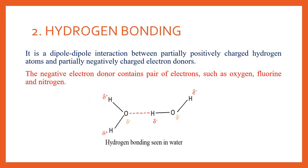Hydrogen bonding is a dipole-dipole interaction where a partially positively charged hydrogen atom forms a bond with partially negatively charged electron donors. For example, in the water molecule, hydrogen bonding is present. The electron donors have a lone pair of electrons and can be oxygen, as in water, fluorine, or nitrogen. The red dots indicate the hydrogen bond between oxygen and hydrogen.